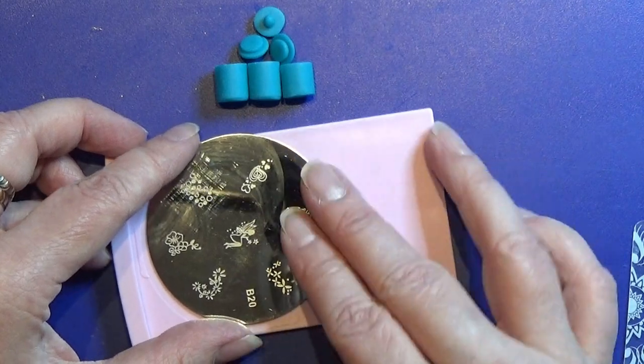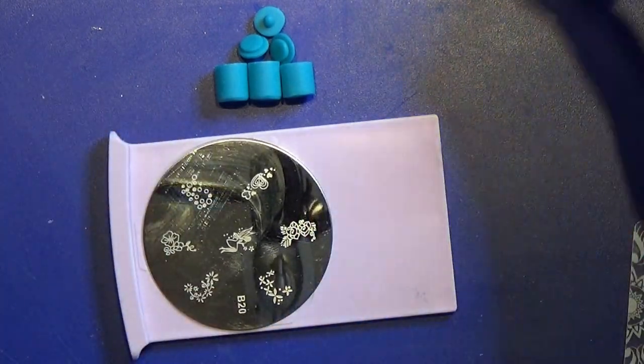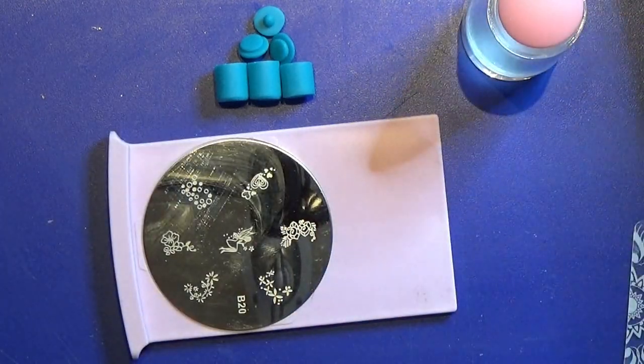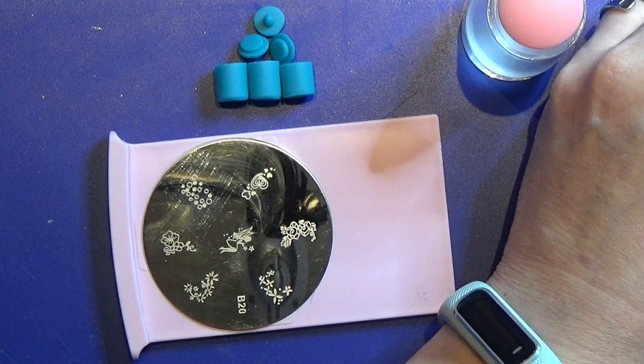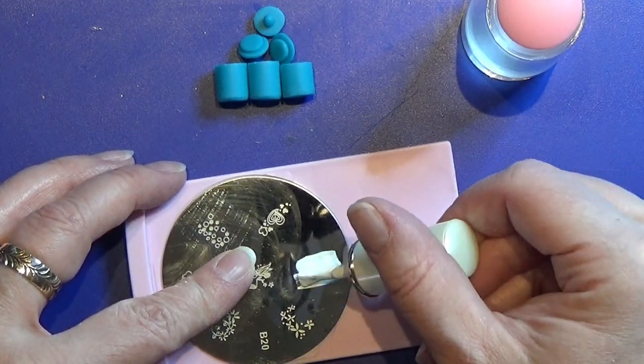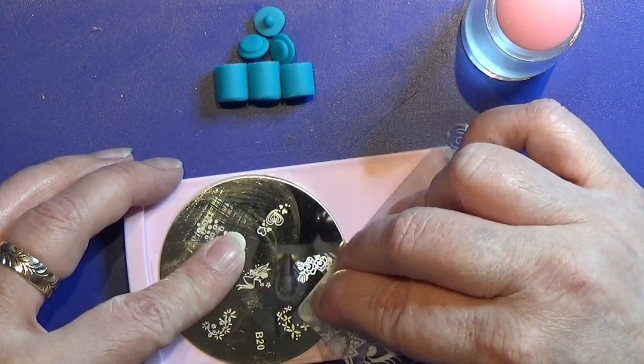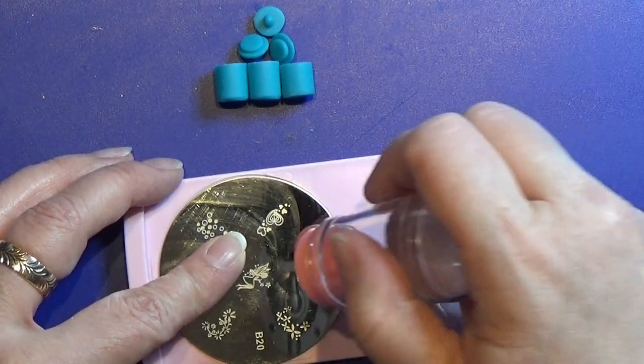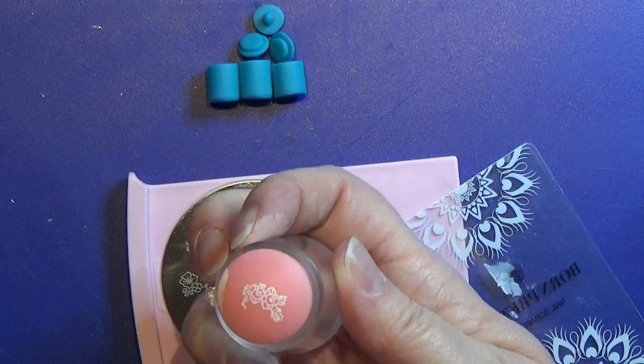So I place that in the holder and take the nail polish that is meant for this, and I place a tiny bit on top of the pattern. Then you scrape off the excess, use this stamp, and take off the pattern with that.